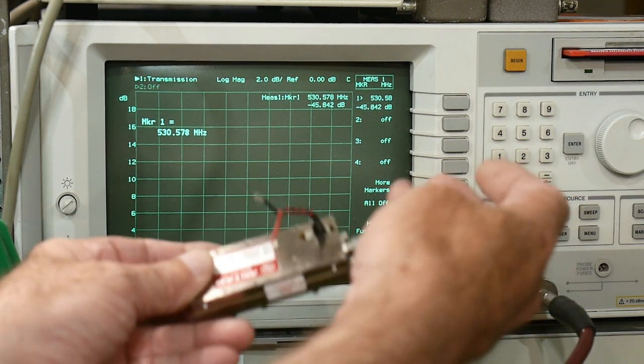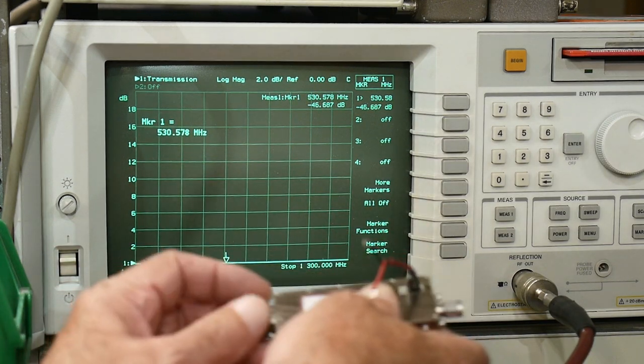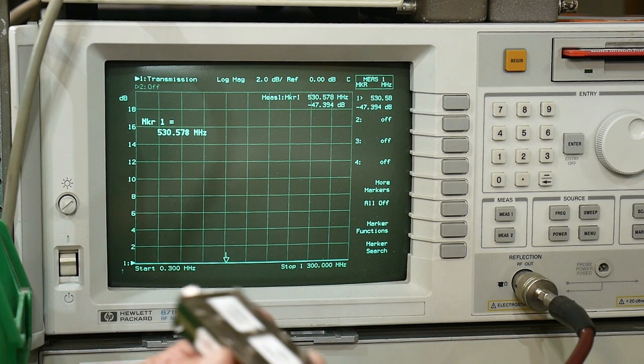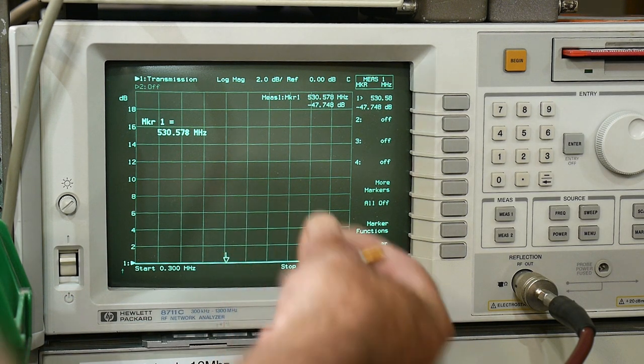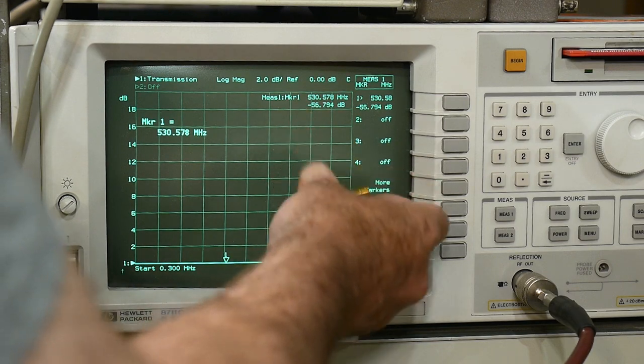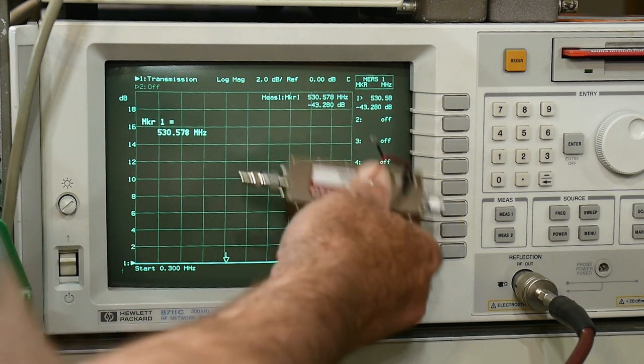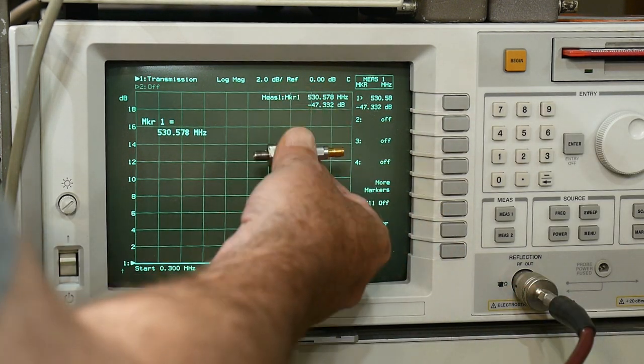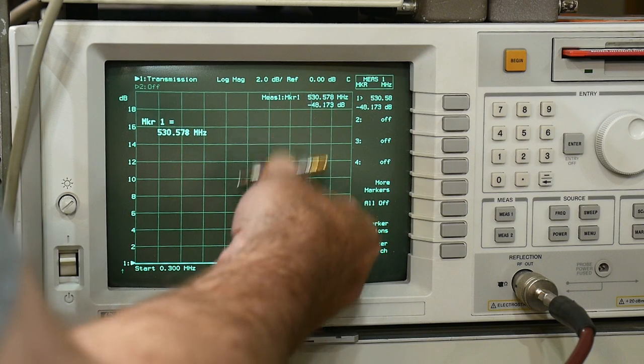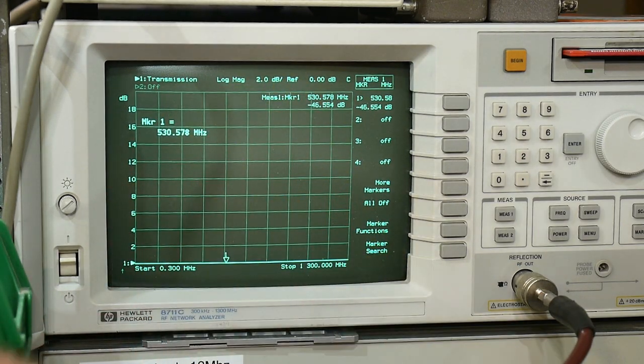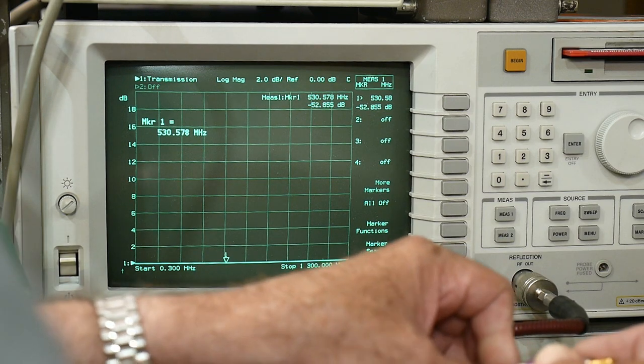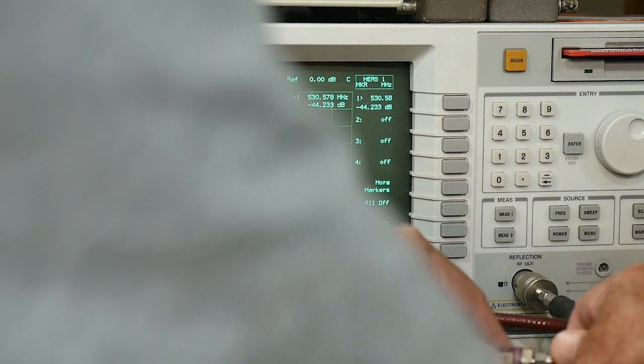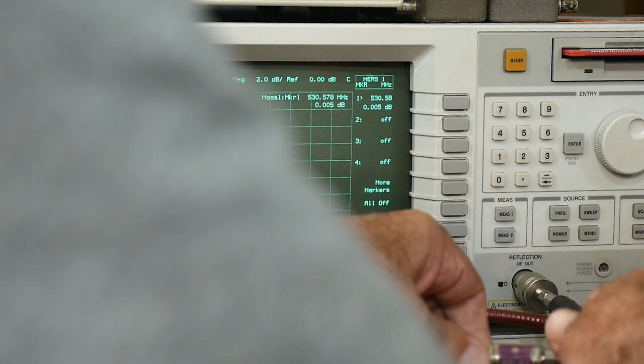So you have to have an attenuator on the output to limit the power and you have to have an attenuator on the input to limit the power. So because we're going to be using an attenuator in series, we're going to measure the S21 parameter of this amplifier, we have to calibrate through the 20 dB attenuator because that's going to be in circuit. And so we will do our through calculation with a 20 dB pad in line.